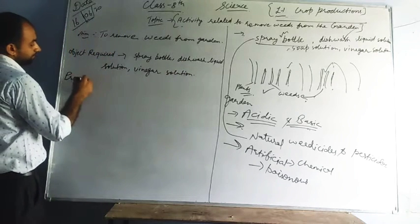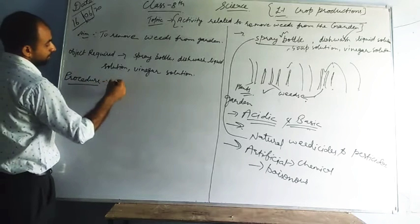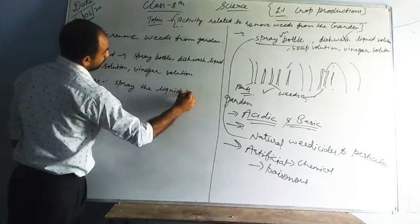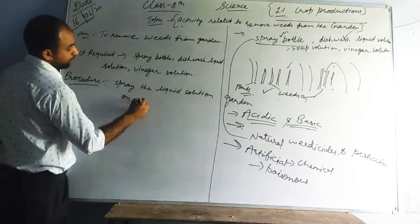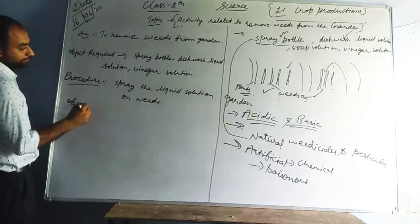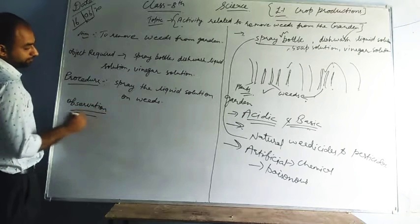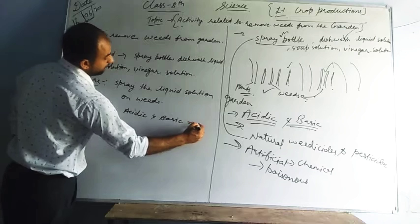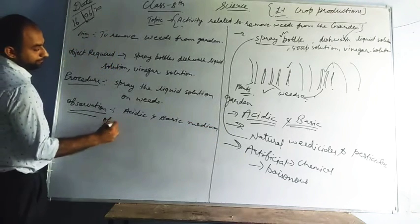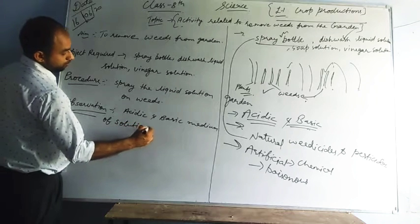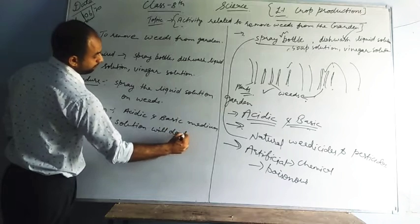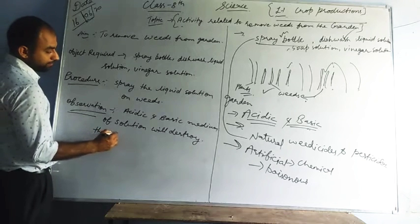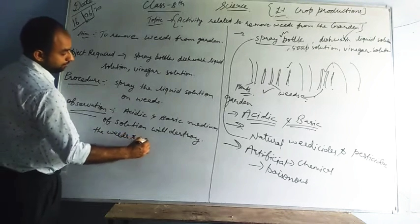Procedure: Spray the liquid solution on the weeds. Observation: The acidic and basic medium of the solution will destroy the weeds.